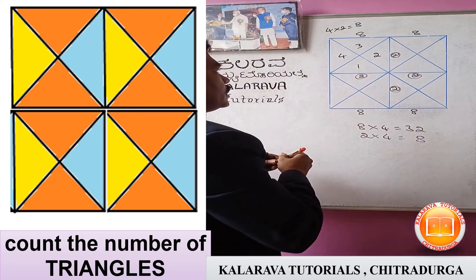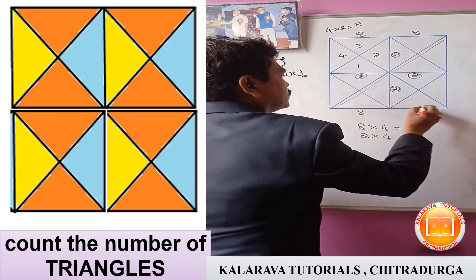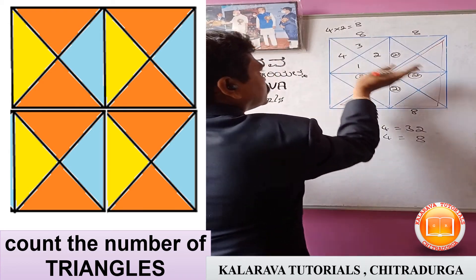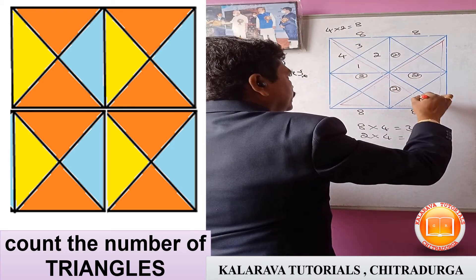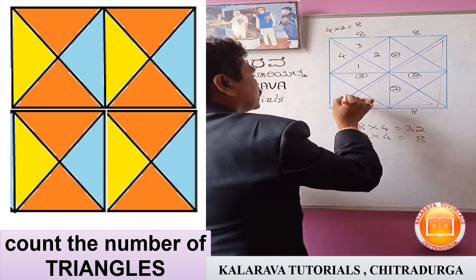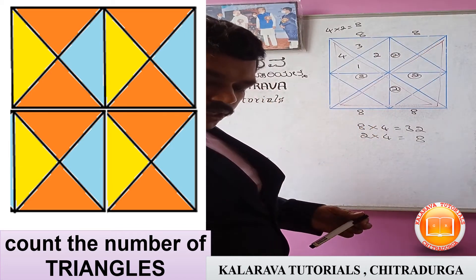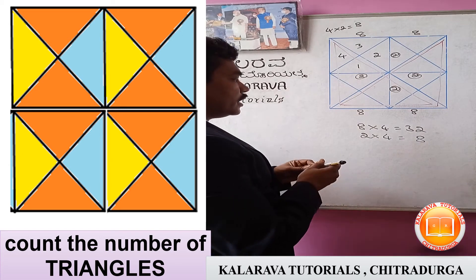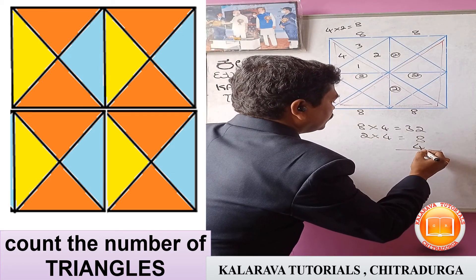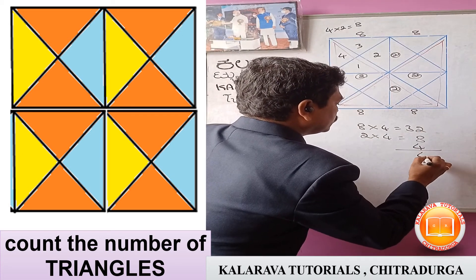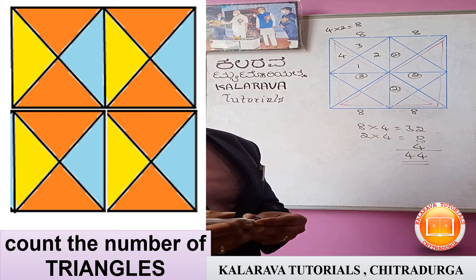And one more triangle is there — this is the biggest one, and opposite it there are 2 triangles. And here is another biggest triangle — in the opposite, there are 2, totally 4 triangles. So we have to add this: 8 plus 4 is 12, plus 1 plus 2 is 14. That means 44 triangles are there.